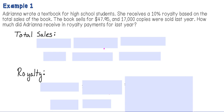In the first example, Adriana wrote a textbook for high school students. She received a 10% royalty based on the total sales of the book. The book sells for $47.95 and 17,000 copies were sold last year. How much did Adriana receive in royalty payments for the last year? The first thing we need to do is calculate the total sales, because we can't calculate the royalty until we know what the total sales is.